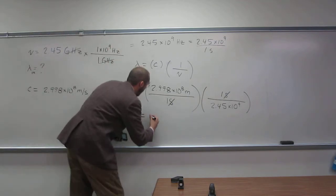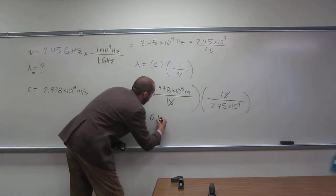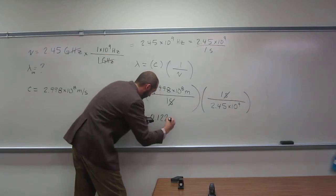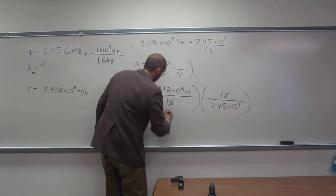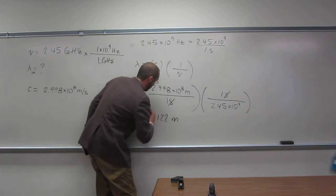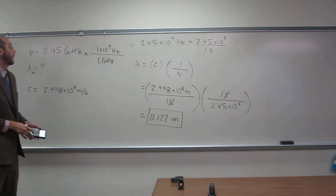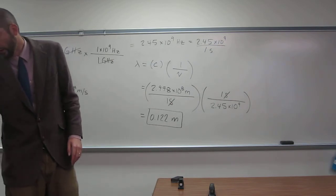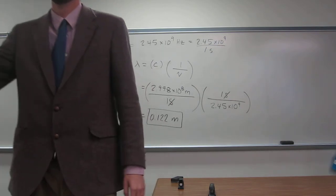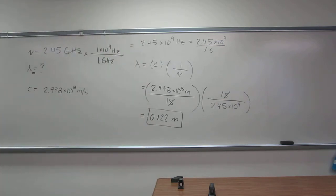So I got 0.122, right, your basic mean. So that's how long the wavelength of, what was it, a microwave oven's wave is, okay? Is there any questions on doing something like that?